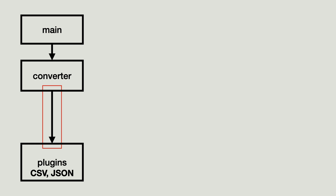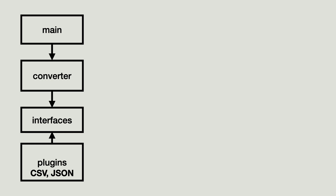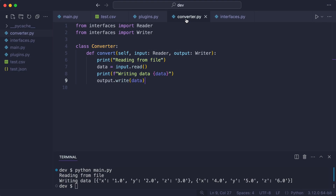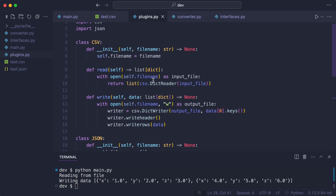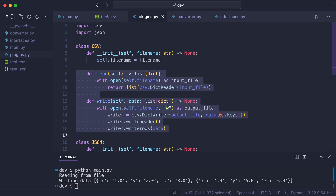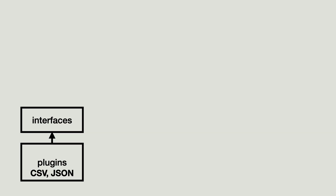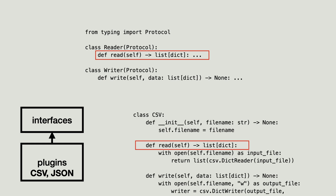This arrow got reversed — but how? By inserting a new interface layer, and that is dependency inversion. Notice that the converter does not import classes from plugins anymore; instead it imports from interfaces. But what about the plugins? It does not import from interfaces — so how does that work? I disable this code in the CSV class — watch what happens in main. The link between plugins and interfaces is not made by inheritance, but is structural. This is known as structural subtyping. The static type checker considers the CSV class of type Reader because it has a read method with the exact same signature.